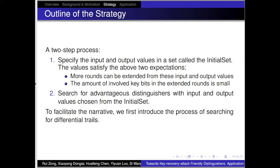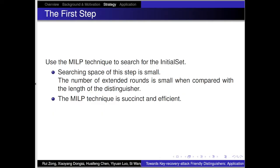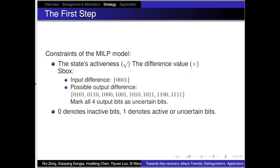We first introduce the process of searching for differential trails. For the first step, we use the MILP technique to search for the initial set. There are two reasons for using MILP: first, the searching space of this step is very small since the number of extended rounds is usually small compared to the distinguisher length; and second, the MILP technique is sufficient and efficient.